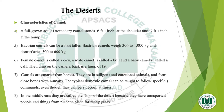A full-grown adult Dromedary camel stands 6 feet 1 inch at the shoulder and 7 feet 1 inch at the hump. Bactrian camels can be a foot taller and weigh 300 to 1000 kg, while Dromedaries weigh 300 to 600 kg. A female camel is called a cow, a male is called a bull, and a baby camel is called a calf. Camels are smarter than horses — they are intelligent and emotional animals that form close bonds with humans. In the Middle East they are called the ship of the desert because they have transported people and goods from place to place for many years.